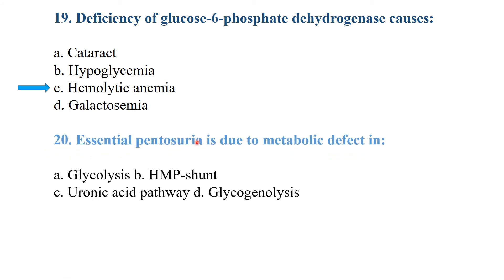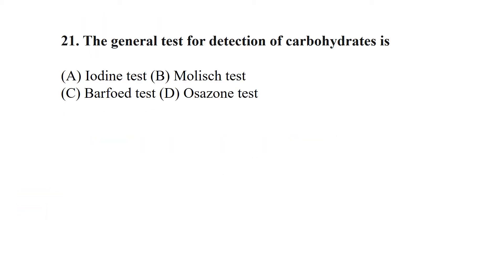Essential pentosuria is due to a metabolic defect in the uronic acid pathway. Question number 21: the general test for detection of carbohydrates is Molisch's test.